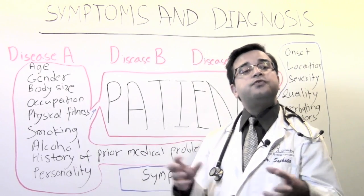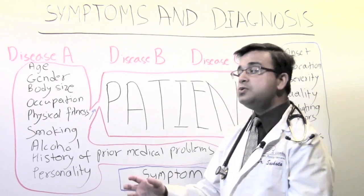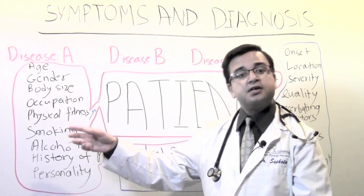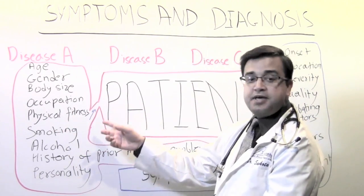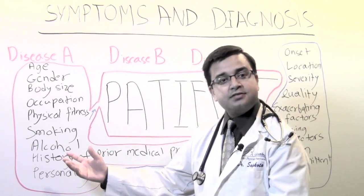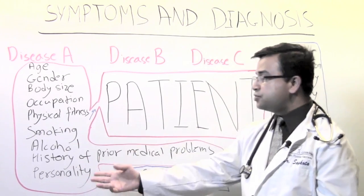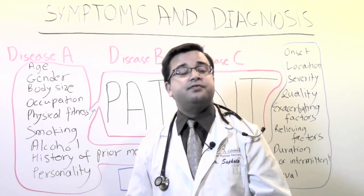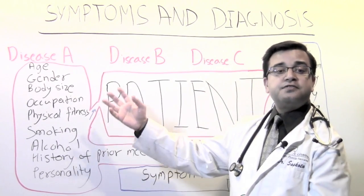You need to know that person very well before you try to make any sense of their symptoms. What are the things about the patient that influence how symptoms appear? The age of the patient, the gender, the body mass index, the occupation, level of physical activity, life experiences, smoking habits, alcohol use, history of any prior medical problems, and even the personality of that patient.